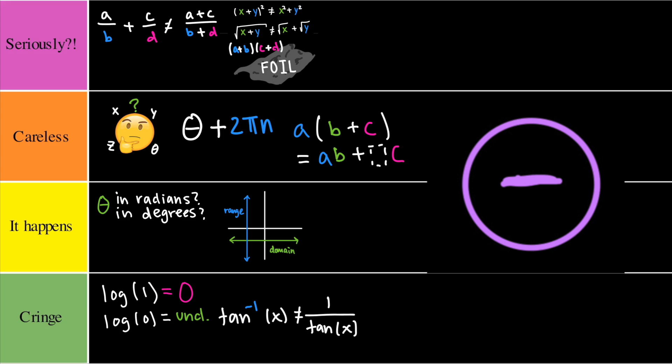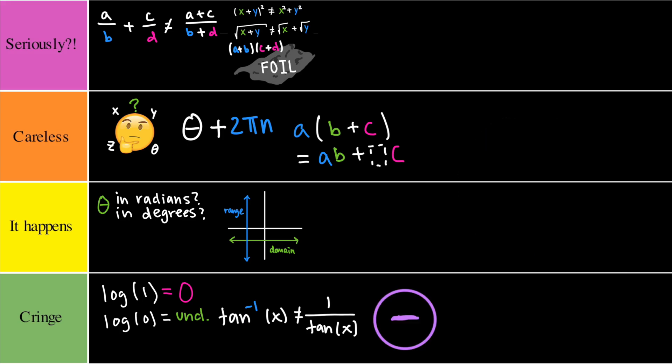Next up we have a big one and that is a negative sign. So oftentimes students will drop or mishandle this sign during computation, such as multiplying two negative numbers or going from one line to the other and forgetting to put that negative sign there. I would have to put this in a cringe category.